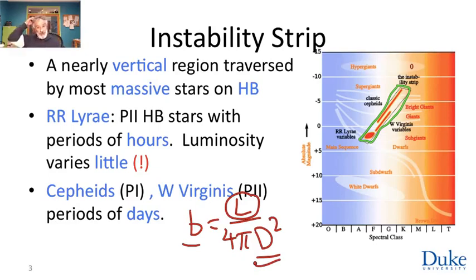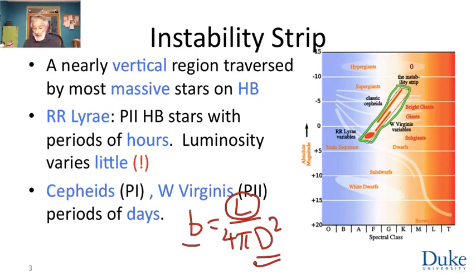RR Lyrae are not the best standard candles, but they'll serve. If you find an RR Lyrae variable in a cluster, you can use that to improve your distance measurement to the entire cluster. This is a sort of improved version of spectroscopic parallax. RR Lyrae variables are quite luminous objects — they're far more luminous than the Sun.